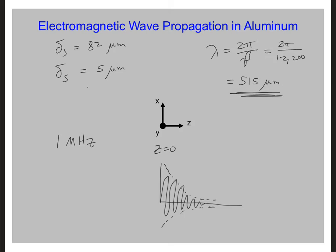And since we calculated the skin depth at 1 megahertz to be 82 micrometers, this means the skin depth is less than the wavelength.